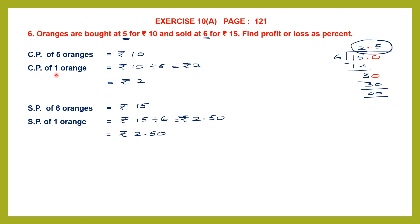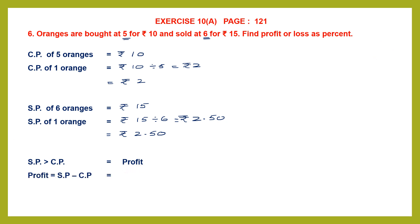So the cost price of 1 orange is 2 rupees and the selling price of 1 orange is 2 rupees 50 paise. Now both are for 1 orange. Let's see which is greater — the selling price is greater than the cost price. When selling price is greater than cost price, there is a profit. So now we need to find the profit, which is selling price minus cost price.